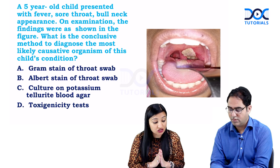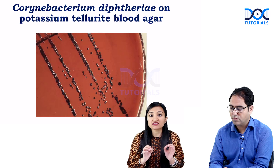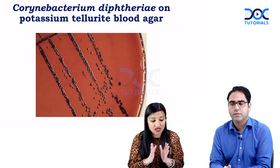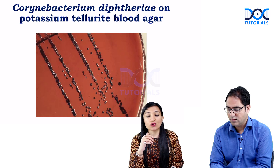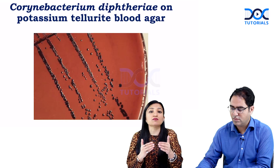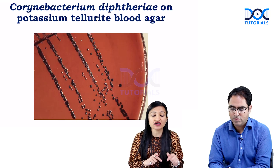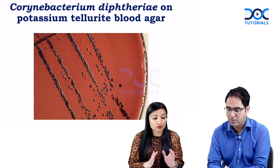Option C says culture on potassium telluride blood agar. This is the best medium to grow Corynebacterium diphtheriae — it is a selective and differential medium. If the throat swab from this suspected diphtheria patient is inoculated, Corynebacterium diphtheriae — whether toxigenic or non-toxigenic — will produce black-colored colonies. It is selective because it favors growth of C. diphtheriae while inhibiting throat commensals. It is differential because C. diphtheriae reduces potassium tellurite to metallic tellurium, imparting black color to the colonies. But again, both toxigenic and non-toxigenic strains will grow, so option C is also wrong.